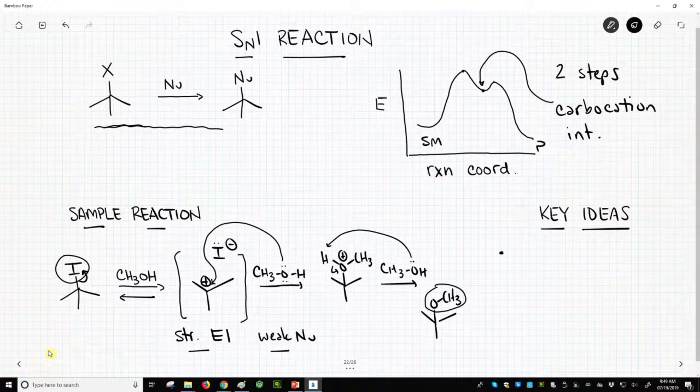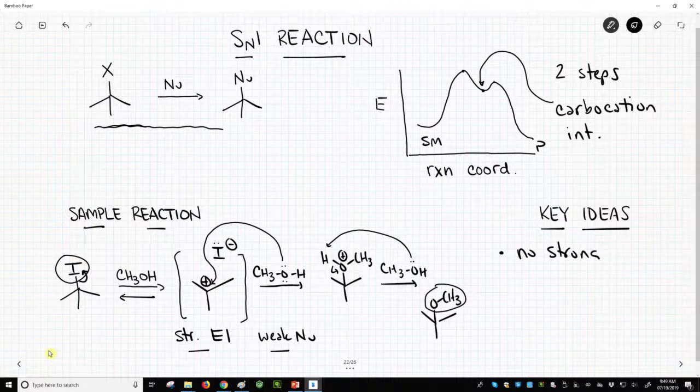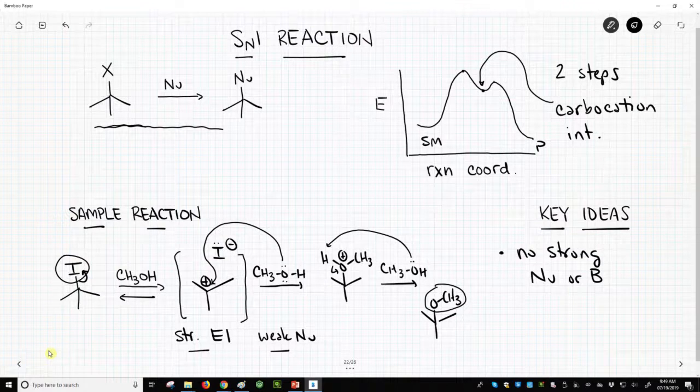So what are the key ideas? I think a key idea is that we don't have a strong nucleophile or base. That allows this reagent to sit now, our alkyl halide, and decide to form the second key idea, a carbocation.